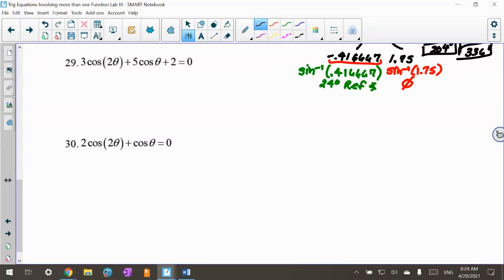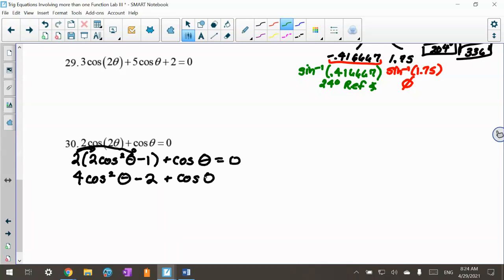I'm going to do this. I've got 2, and now I'm going to use the 2 cosine squared theta minus 1 plus cosine theta equals 0. So now I'm going to do the distributive property.